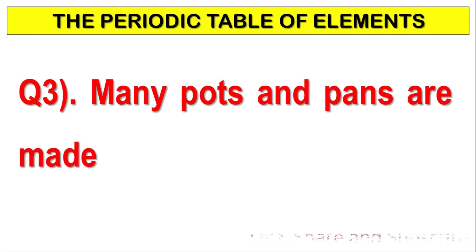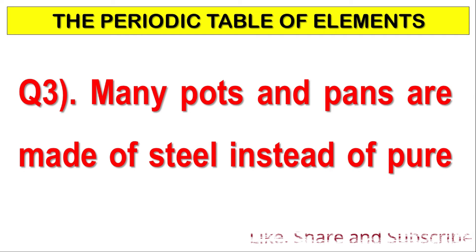Many pots and pans are made of steel instead of pure iron. Why?